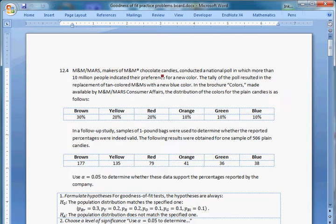M&M Mars, makers of M&M chocolate candies, conducted a national poll in which more than 10 million people indicated their preference for a new color. The tally of the poll resulted in the replacement of tan-colored M&Ms with a new blue color. In the brochure Colors, made available by M&M Mars Consumer Affairs, the distribution of the colors of plain candies is as follows: 30% brown, 20% yellow, 20% red, 10% orange, 10% green, and 10% blue.